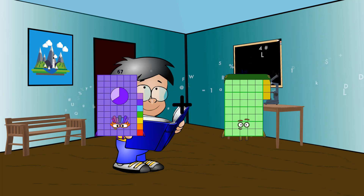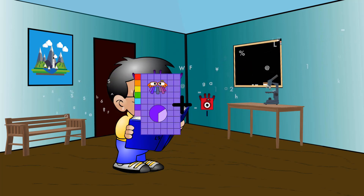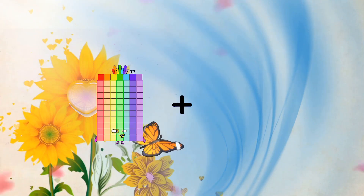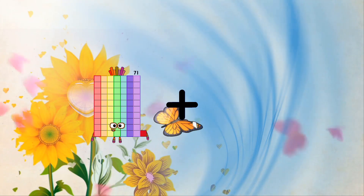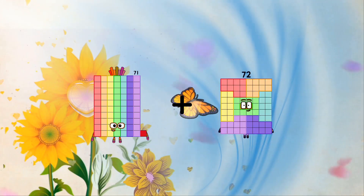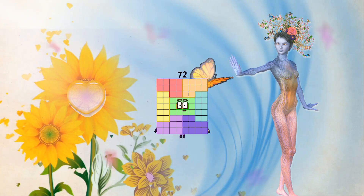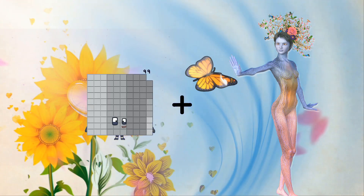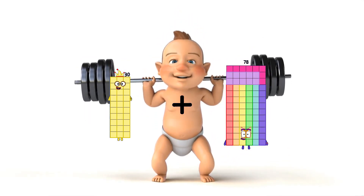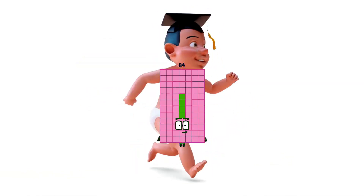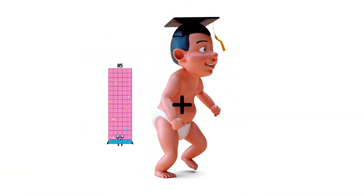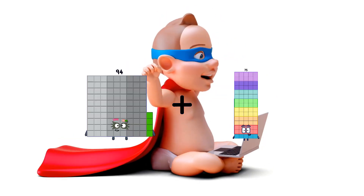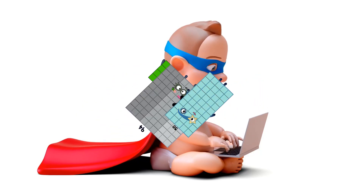67 plus 1 equals 68. 71 plus 1 equals 72. 29 plus 62 equals 91. 30 plus 54 equals 84. 94 plus 50 equals 144.